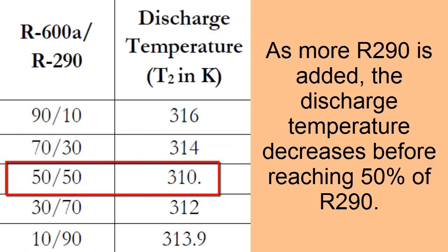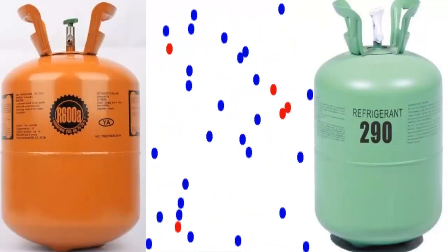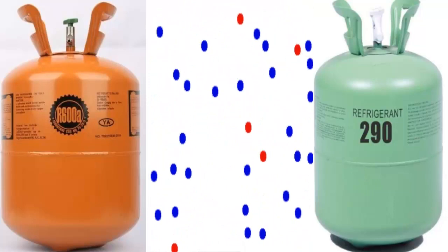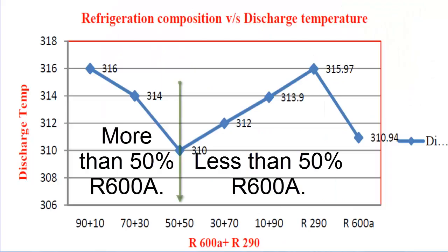The greater the amount of R290 in the mixture, without exceeding 50% concentration, the compressor discharge temperature decreases. After surpassing 50%, the opposite occurs. Remember that a lower compressor discharge temperature increases the lifespan of the motor windings. On the screen we have different discharge temperature values for some mixtures between R600A and R290.